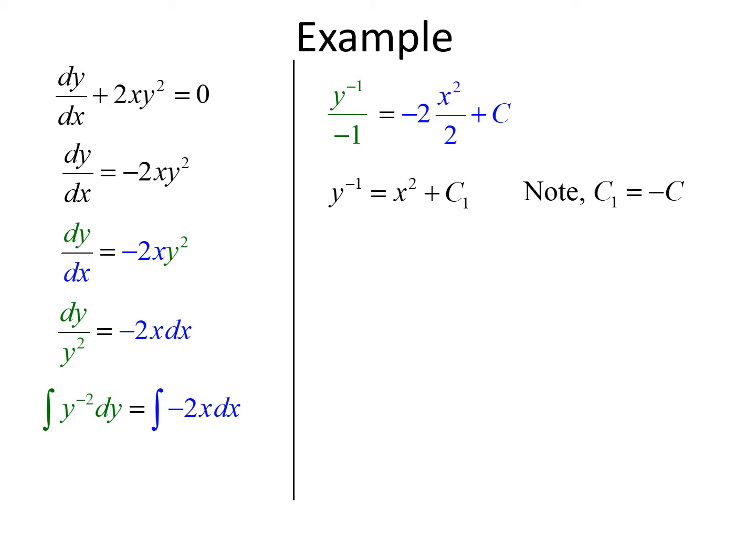The final step to get y by itself is to take the reciprocal of both sides. So y equals 1 over x squared plus c1. And that'll be our explicit solution for this differential equation.